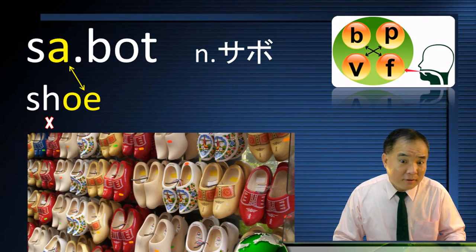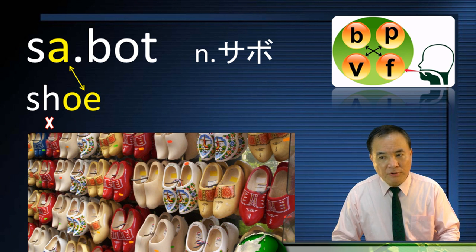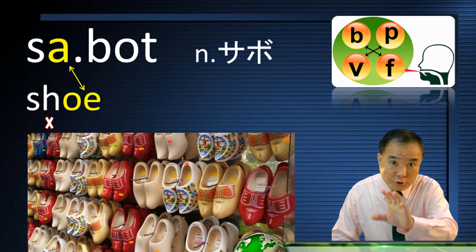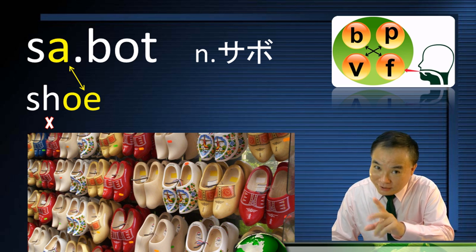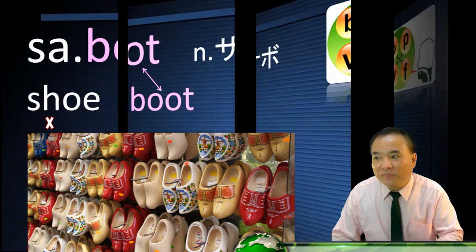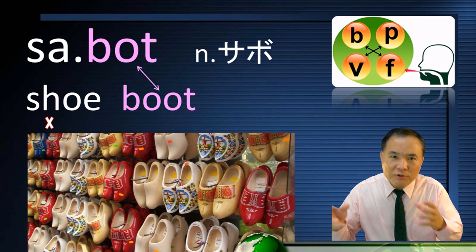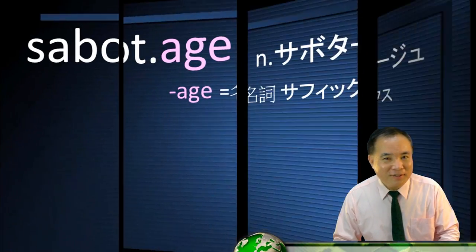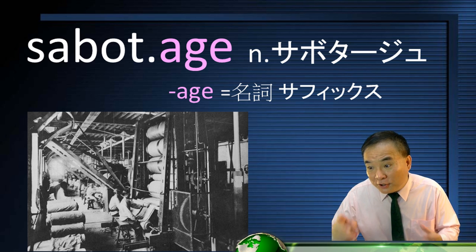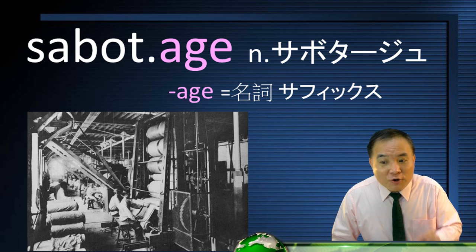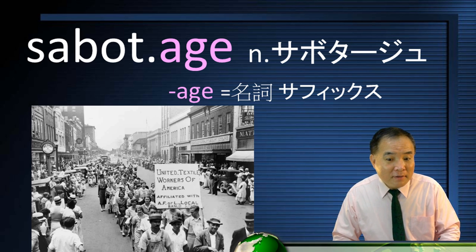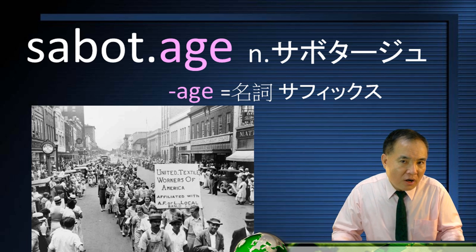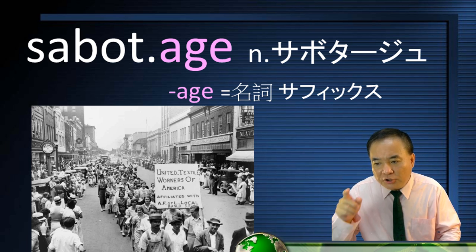Another word in this family is sabot. Sabot means wooden shoes. S-A in sabot is short for shoe — S to S, ignore H, with vowels being interchangeable. And B-O-T is boot. Therefore, wooden shoes similar to boots are called sabots. Europeans often wore sabots while working. In the 15th century, some workers secretly threw their sabots into textile machines to break them. This was because they were afraid the machines might take away their jobs and make them jobless. Now any kind of secret damage is called sabotage.